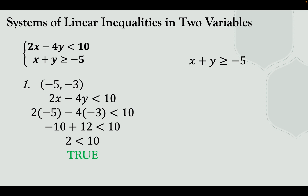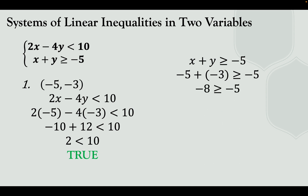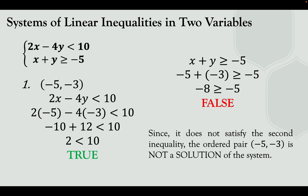Now substitute negative 5 and negative 3 into the second inequality: x plus y greater than or equal to negative 5. So negative 5 plus negative 3 gives negative 8. Is negative 8 greater than or equal to negative 5? No, that is false. Since it does not satisfy the second inequality, the ordered pair negative 5 and negative 3 is not a solution of the system.